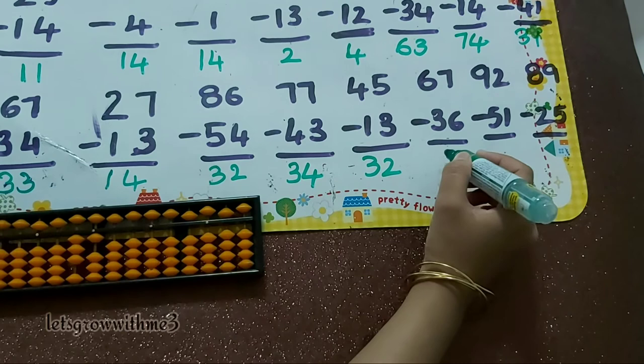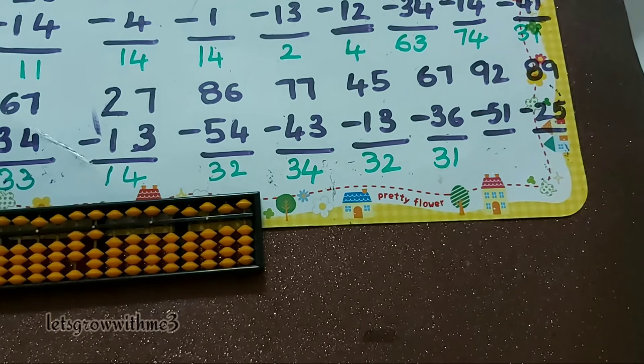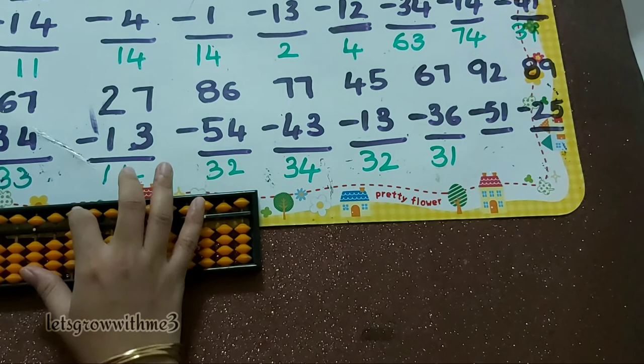Next one, 92 minus 51: minus 5, minus 5, minus 1. So the answer is 41.